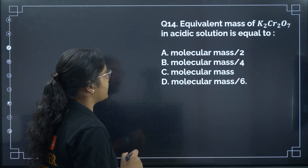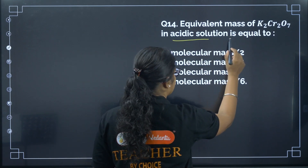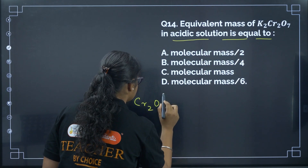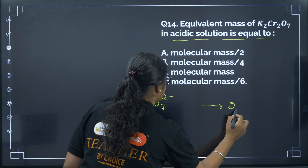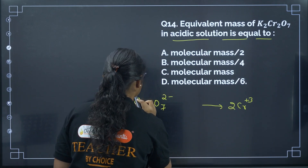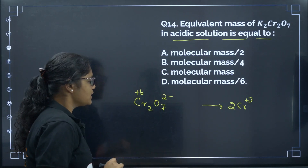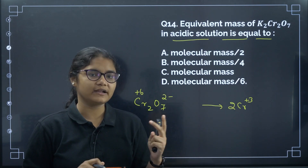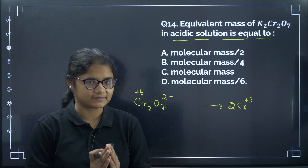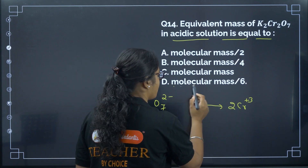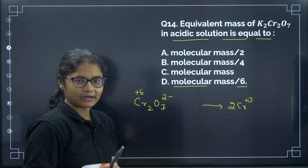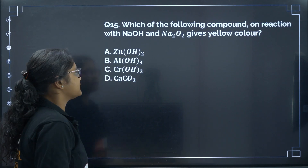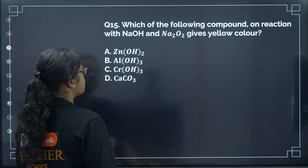Question 14: What is the equivalent mass of K₂Cr₂O₇ in acidic medium? Cr₂O₇²⁻ is converted to 2Cr³⁺, going from +6 to +3, so 3 electrons are involved per chromium. With 2 chromium atoms, the total n-factor is 6. Equivalent mass equals molecular mass divided by n-factor, so it is M/6. The correct answer is option D.